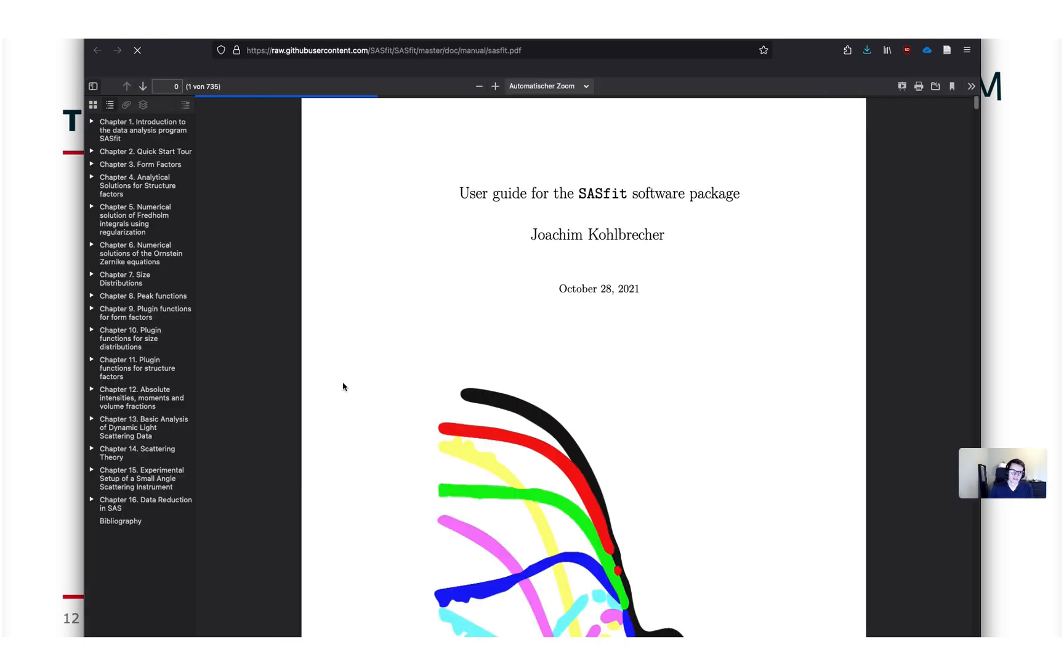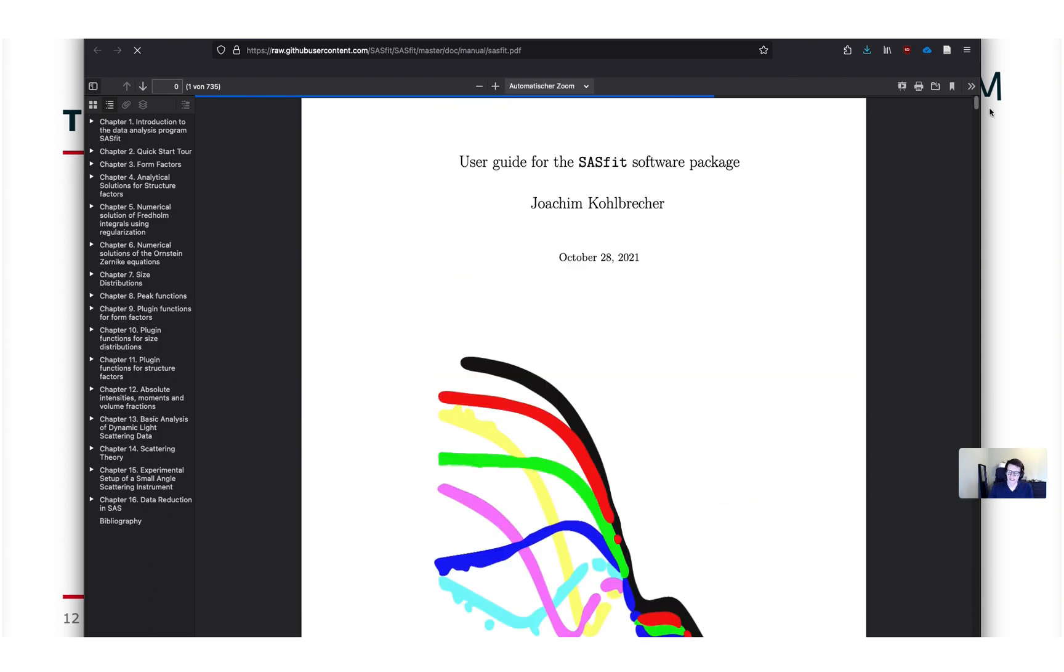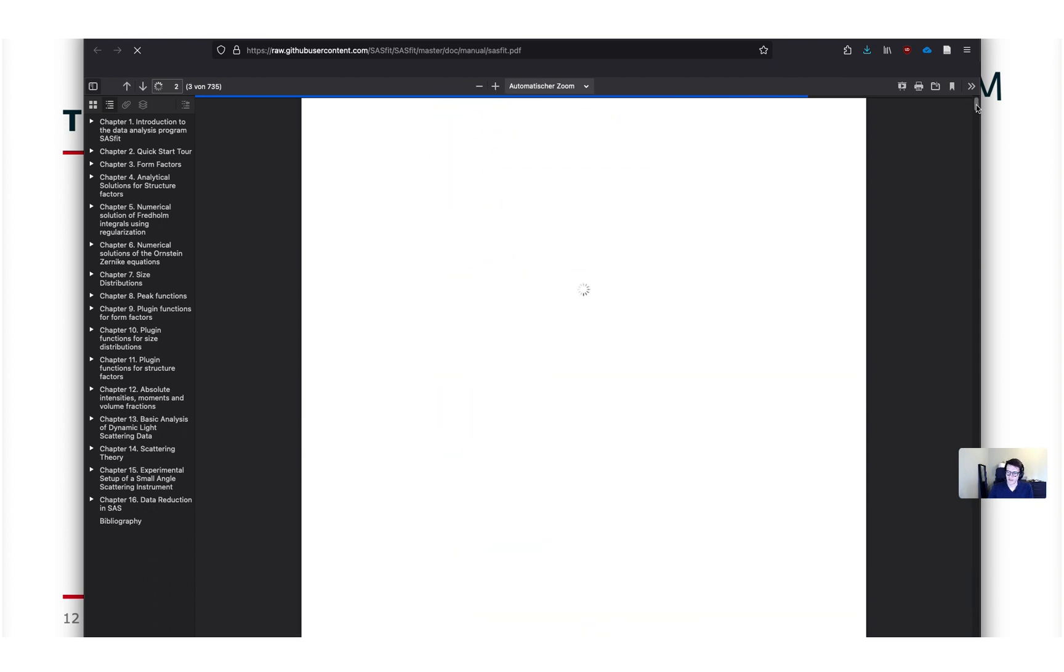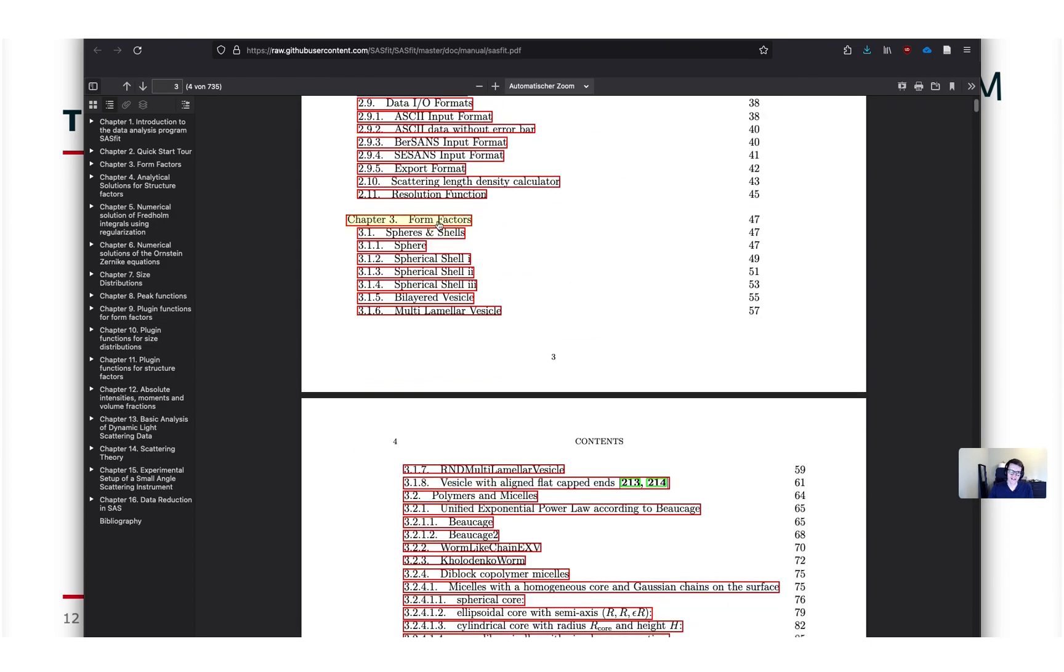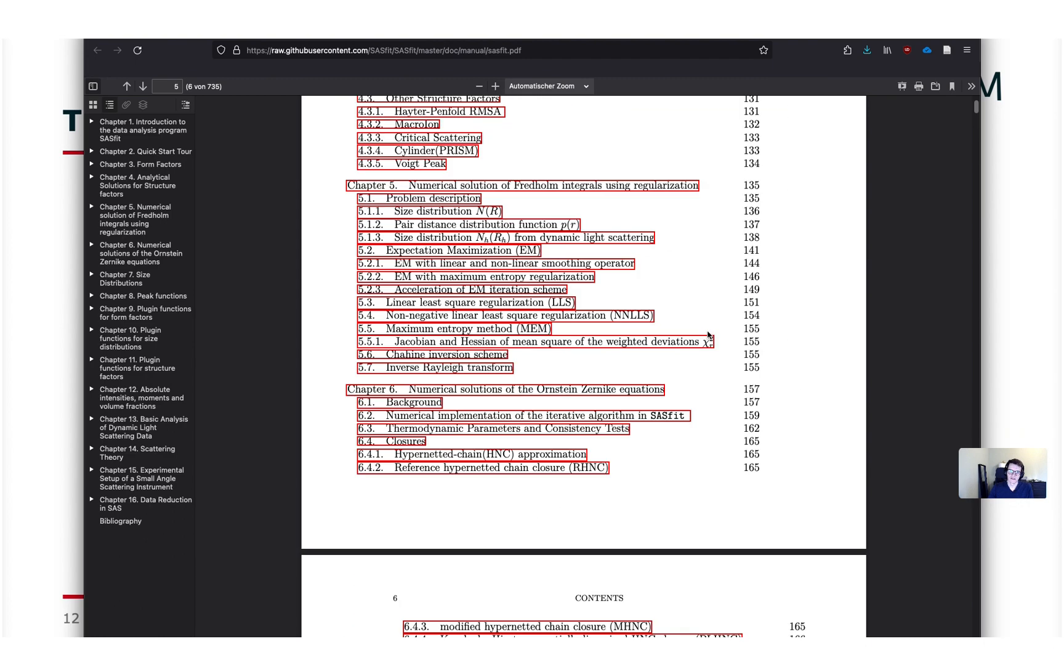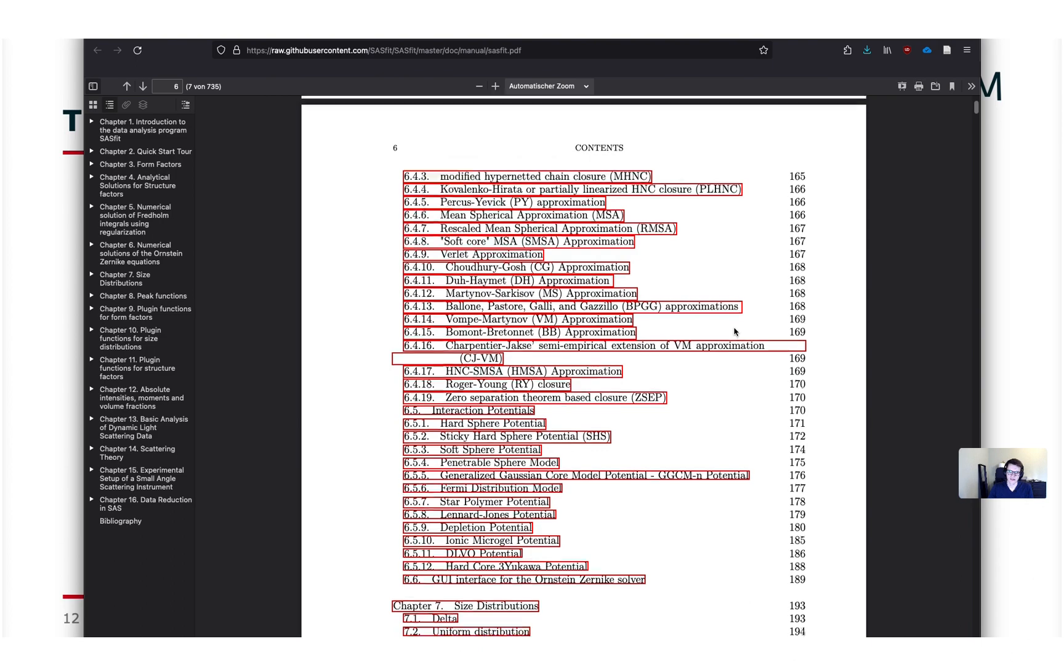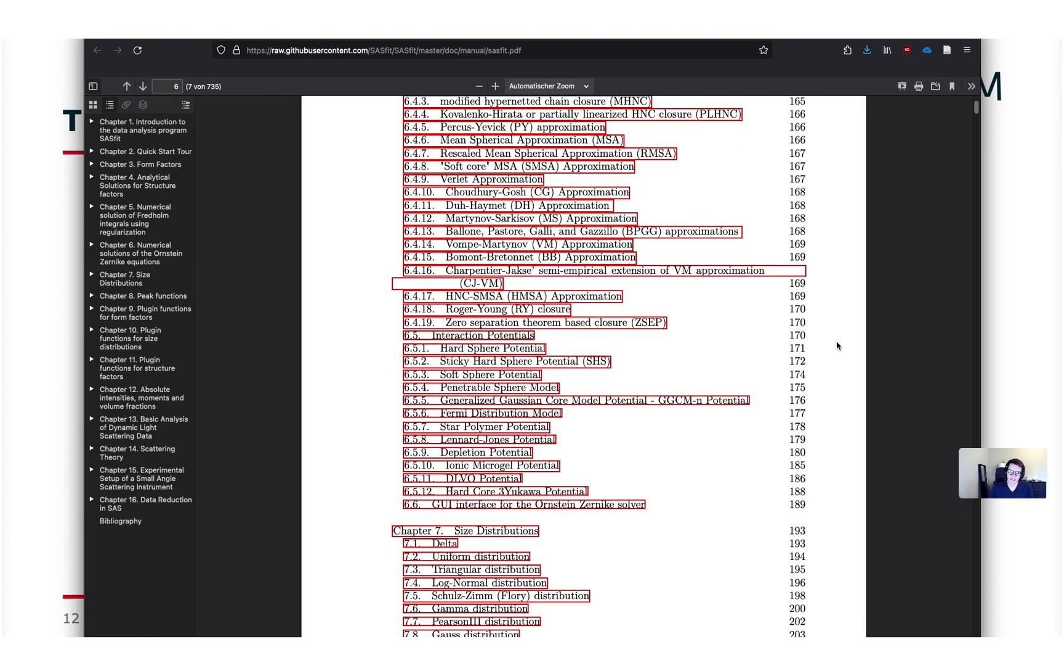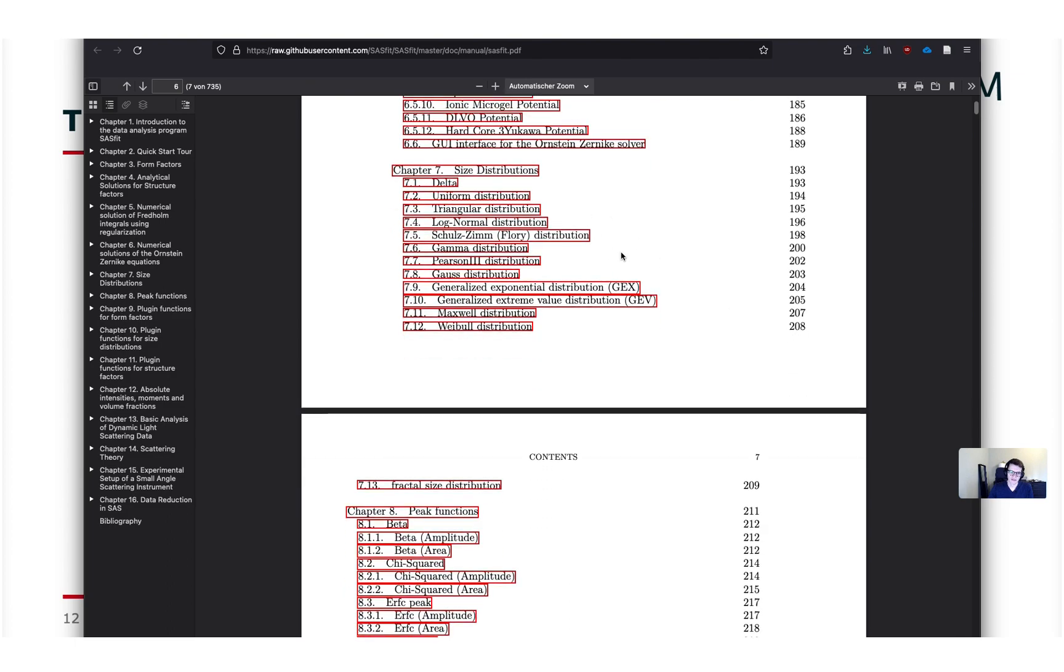It links you to the manual which is stored on github. It contains lots of scientific documentation of most of the models and implementations also for the structure factors for example. So let it load first. It's quite large. This is the form factors. Here's some overview of the regularization process and the Ornstein-Zernike solver and its equations. Many of the definitions and scientific backgrounds for that.